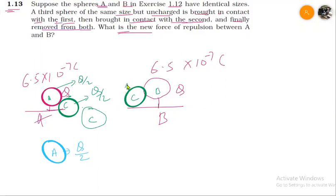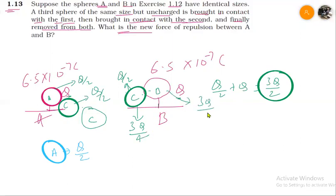How much is C from the first charge? C from the first charge is Q by 2. And B from the first charge is Q. So how much total charge will be Q by 2 plus Q? That is 3Q by 2. So this is the net charge. And this charge will be equally distributed in both spheres. So how much will C get new? 3Q by 4. And this will also get 3Q by 4.